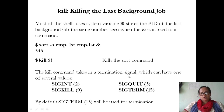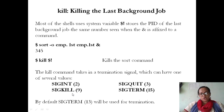The kill command takes a termination signal with one of several values: SIGINT 2 (same result as pressing Ctrl+C, does not automatically end the process), SIGQUIT 3 (like SIGINT but also produces a core dump), SIGKILL 9 (forces termination, cannot be ignored or gracefully shut down), and SIGTERM 15 (terminates the process but gives time to gracefully shut down).